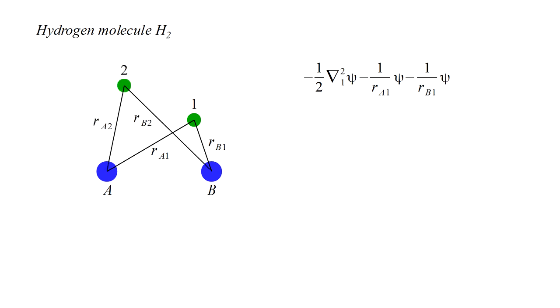The second electron also needs three corresponding terms. Finally, there is a term for the repulsion between the protons and a term for the repulsion between the electrons. Each potential energy term in the Schrödinger equation corresponds to a line in this figure.